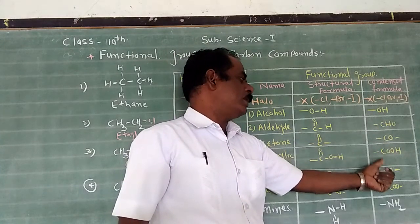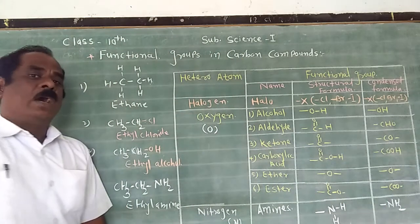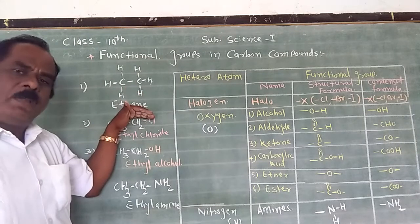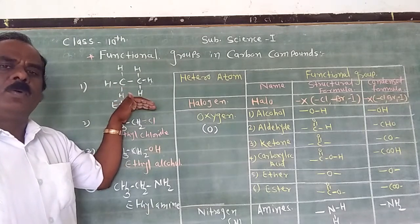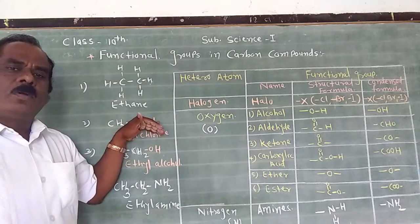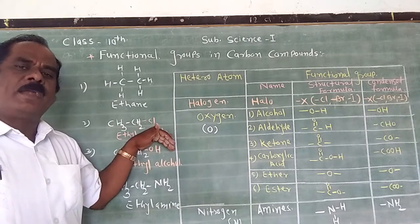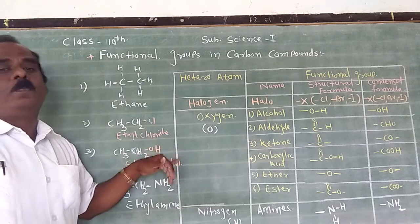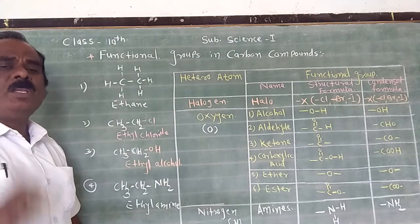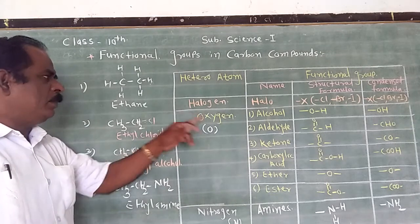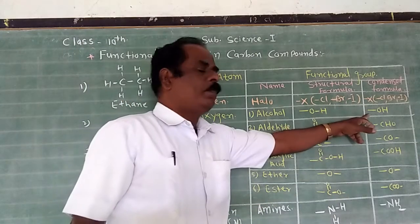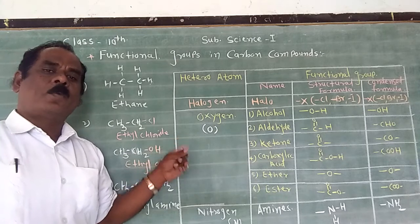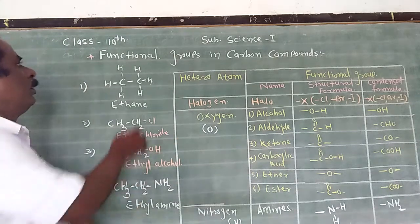Examples of functional group notation: bond OH, bond CHO, bond CO, bond O, bond NH, etc. So how do we define a functional group from these examples? The heteroatom which replaces the hydrogen atom of a hydrocarbon compound to form a new compound, and which is responsible for the property and reactivity of that compound — such a heteroatom or group is called a functional group. In other words, the atom or group present in a hydrocarbon compound that is responsible for its property and reactivity is called the functional group.